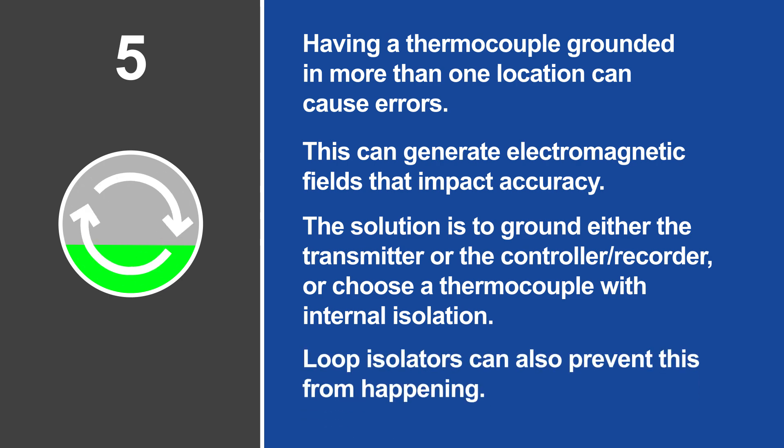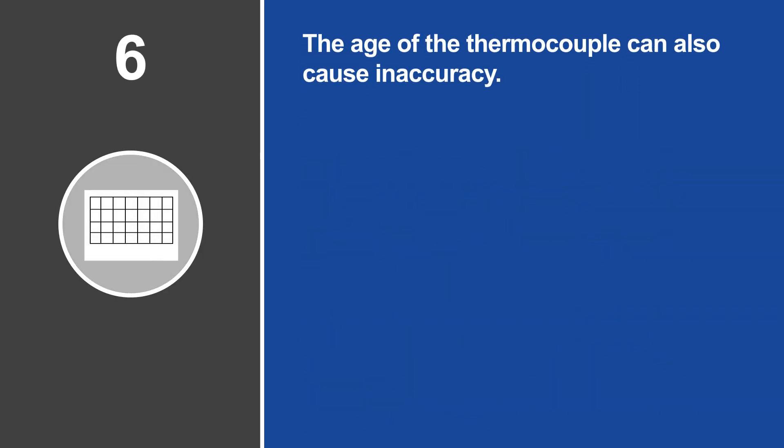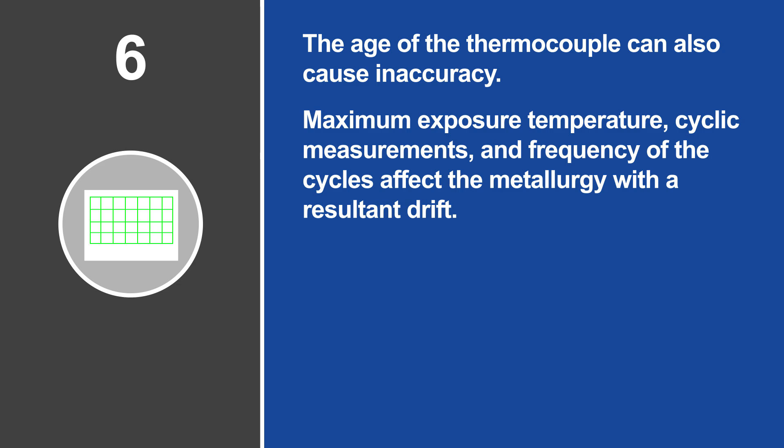The age of the thermocouple can also cause inaccuracy. Maximum exposure temperatures, cyclic measurements, and frequency of the cycles affect the metallurgy with a resultant drift, usually downward. If this happens, 10 to 20 degree Fahrenheit errors are common.